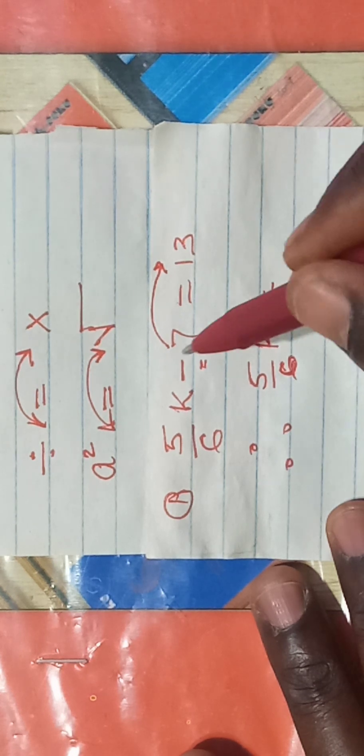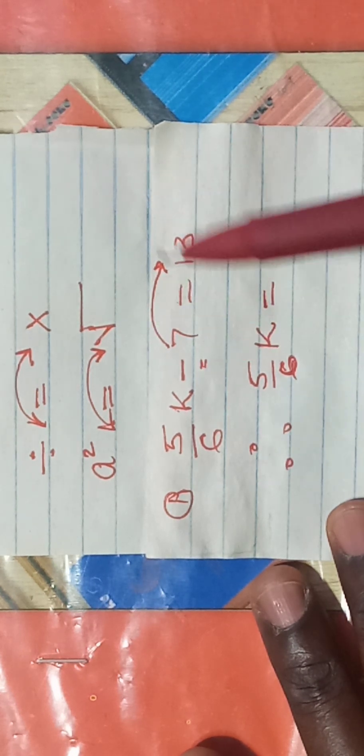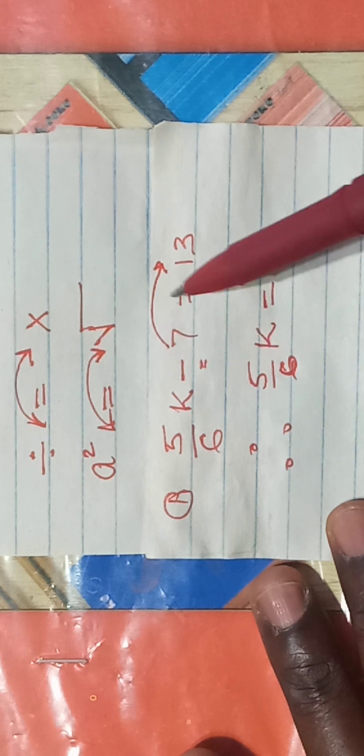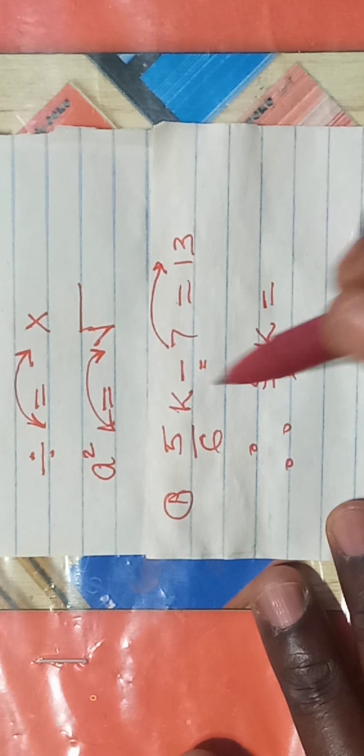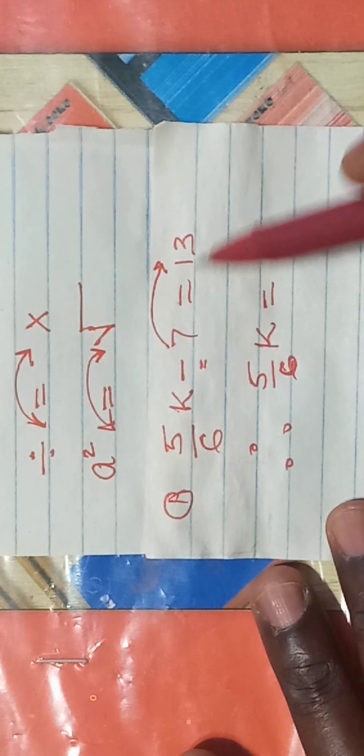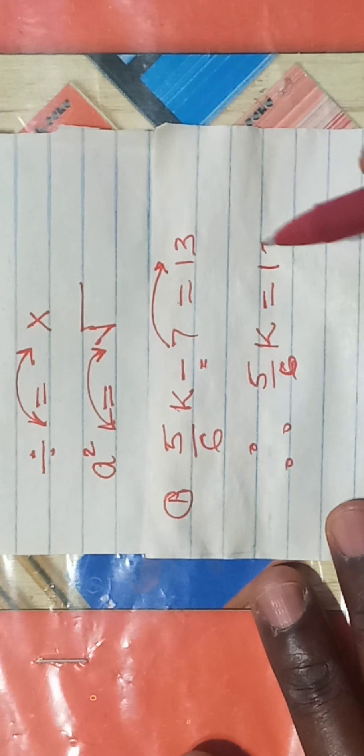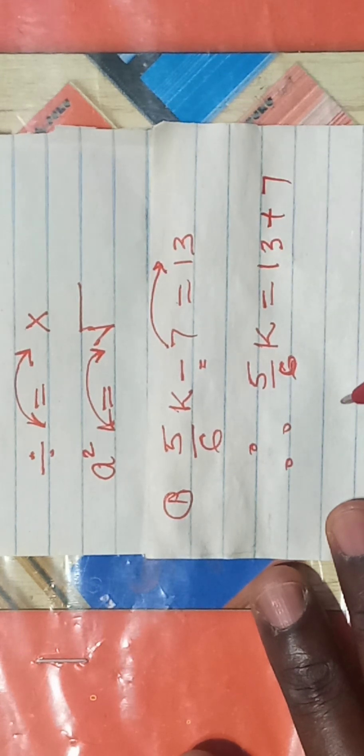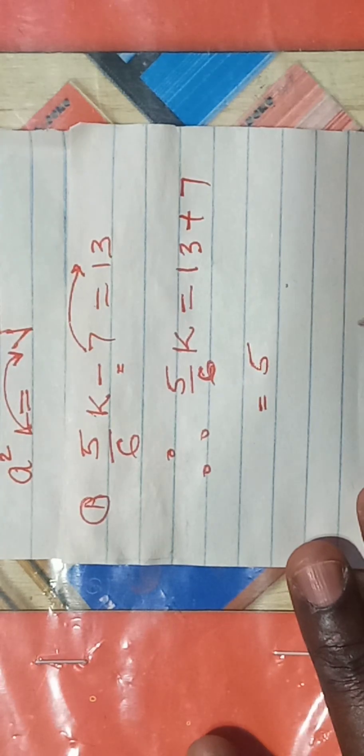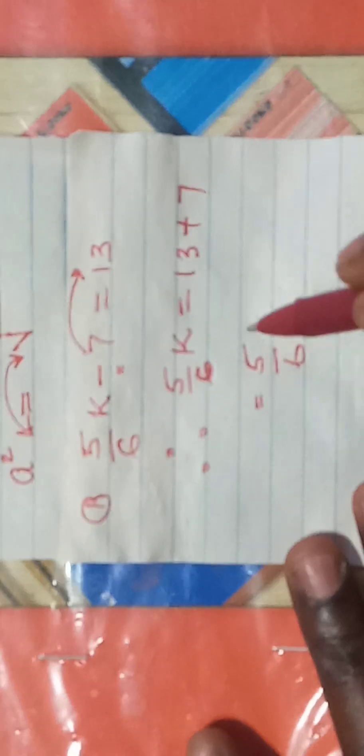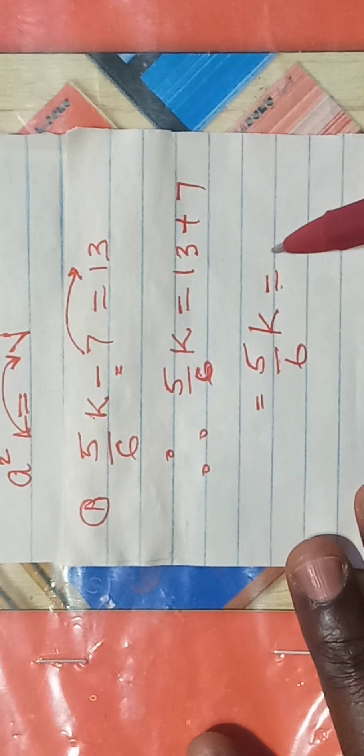Then, is equal to... this negative sign, we said the minus sign when it crosses the equal sign, it will turn to be the opposite of negative. The opposite of minus is a plus. So, 13 plus 7. So we'll have 5 over 6k will equal to 20.